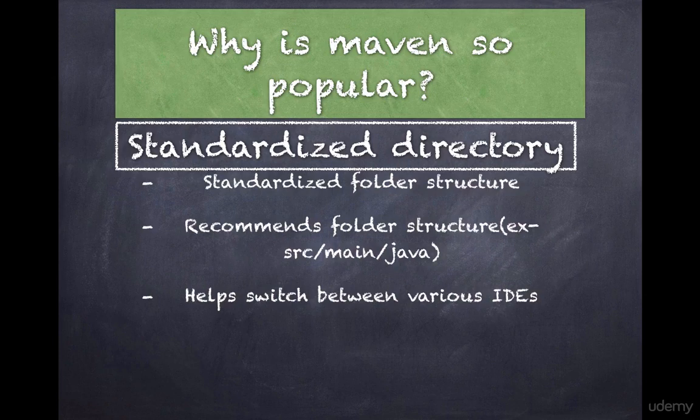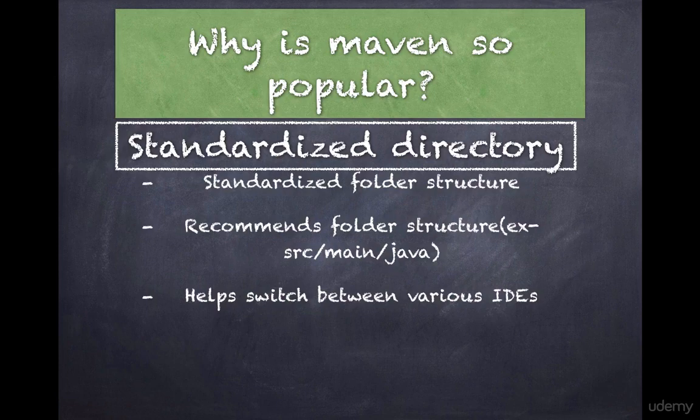This convention makes it easy to switch to and start using a new IDE. IDEs vary in their project structure and folder names — for example, a dynamic web project in Eclipse might use a web content folder to store web assets, whereas NetBeans or IntelliJ might use a web pages folder with a different structure. With Maven, your projects follow a consistent structure and become IDE agnostic.